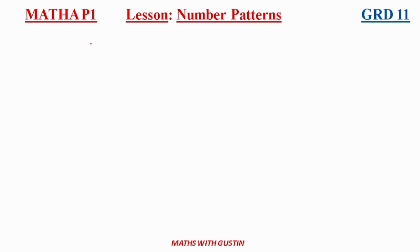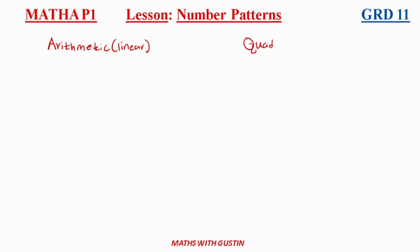In Grade 11 we have two patterns you need to know: we have an arithmetic sequence — your teacher would also call it linear — and then we also have what is known as a quadratic sequence.